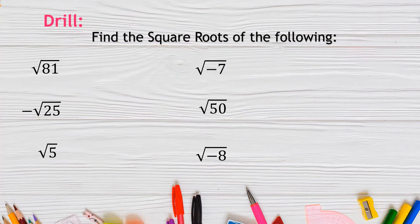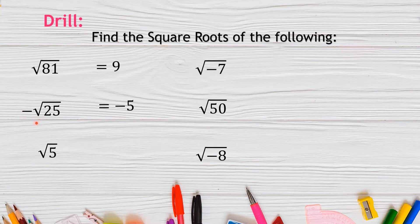Now we will find the square roots of the following numbers. The square root of 81 is 9. If we have a negative sign outside the radical sign, we get the square root of 25, which is 5, and affix the negative sign, giving a final answer of −5. If we have a prime number under the radical sign, such as √5, since 5 is not a perfect square, we will accept the answer as √5.